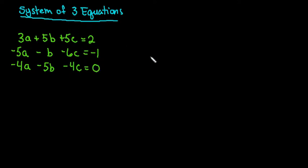What we are going to do is use elimination to solve this. Elimination is probably the easiest way because we want to first take it from three equations down to a system of two equations, since we know techniques — either elimination or substitution — to solve once we get down to two equations. So when you start, you want to decide which variable would be the easiest to cancel out.